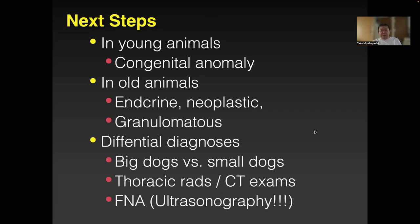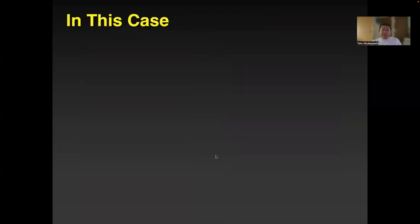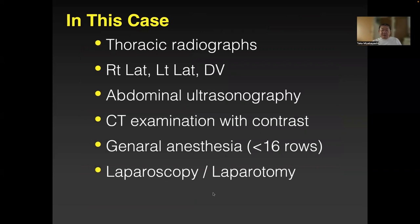Make sure you do thoracic radiographs to check for nodules — any nodules means trouble. Use the DAMNIT or vitamin D mnemonic — degenerative, developmental, metabolic, inflammatory, infectious, neoplastic, traumatic. These are the disease categories. In this case we did thoracic radiograph, ultrasound, CT under general anesthesia.